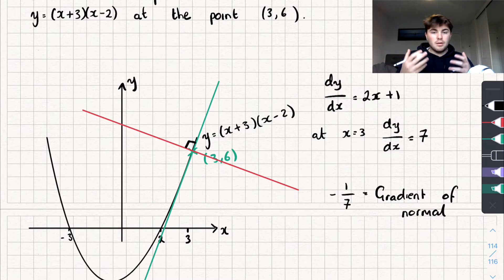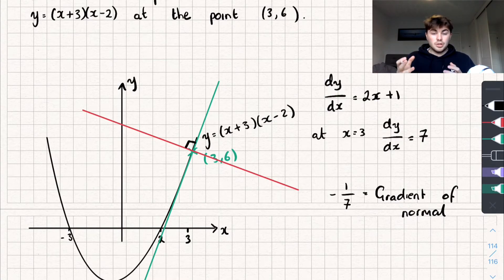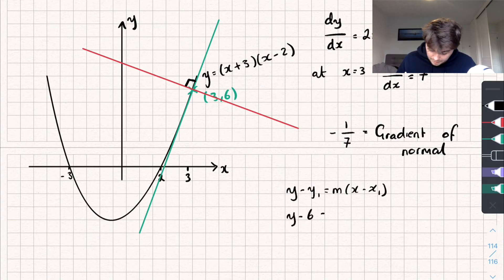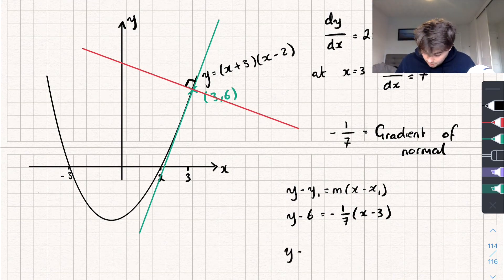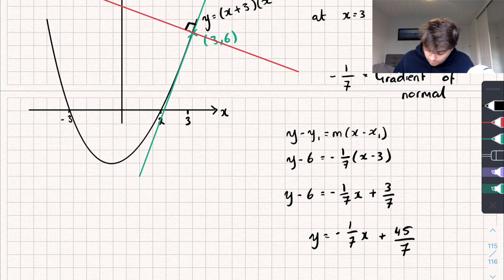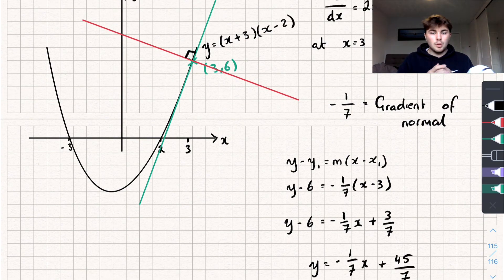Now we've found the gradient of the normal and we have the coordinates of the point on the normal, so we substitute into y − y₁ = m(x − x₁): y minus 6 equals negative 1 over 7 times (x minus 3). Expanding the right-hand side gives y minus 6 equals negative x over 7 plus 3 over 7. Adding 6 to both sides and writing it in the form y = mx + c gives y equals negative 1 over 7 x plus 45 over 7. That's the equation of the normal line.